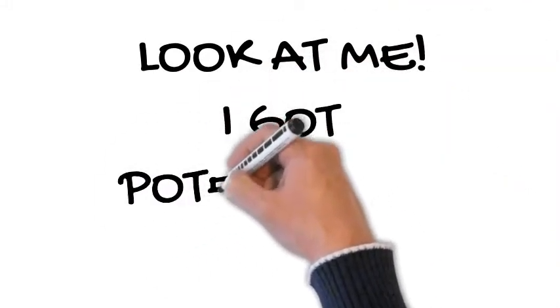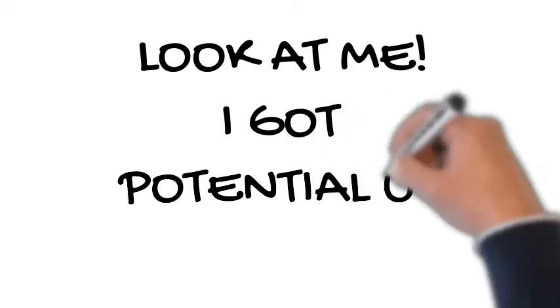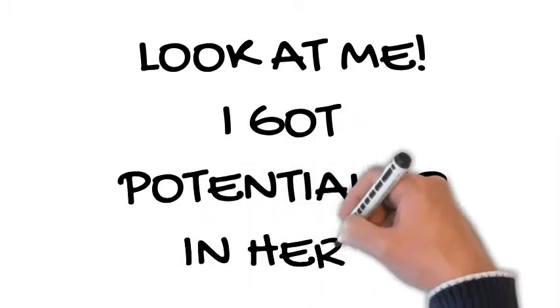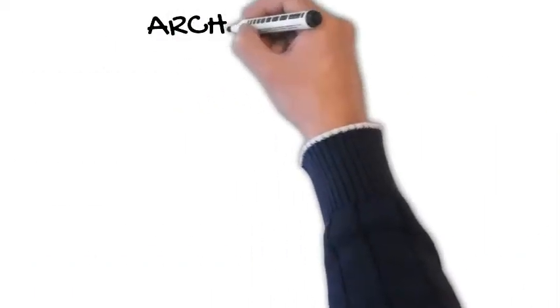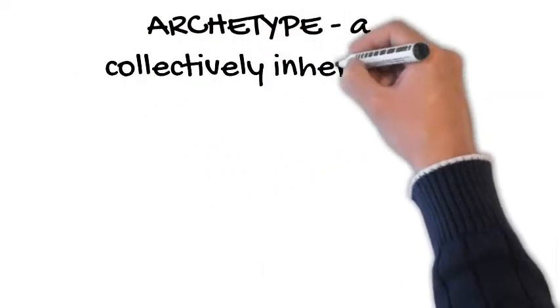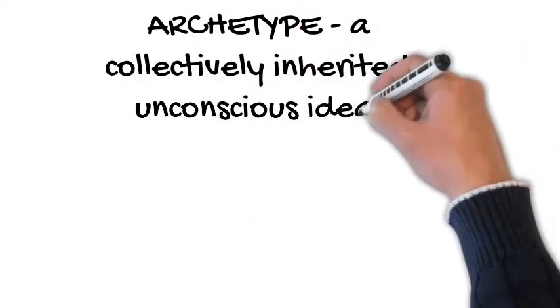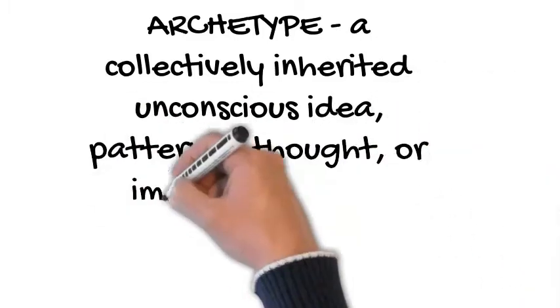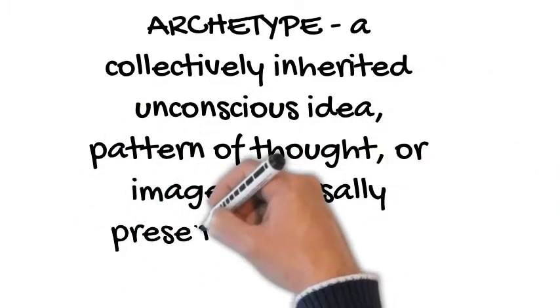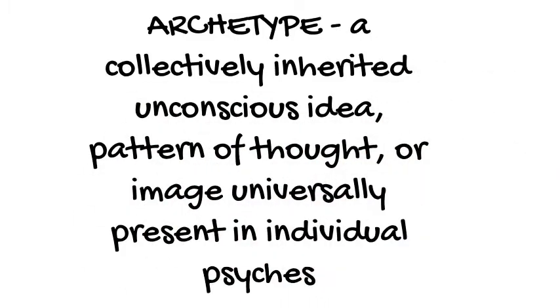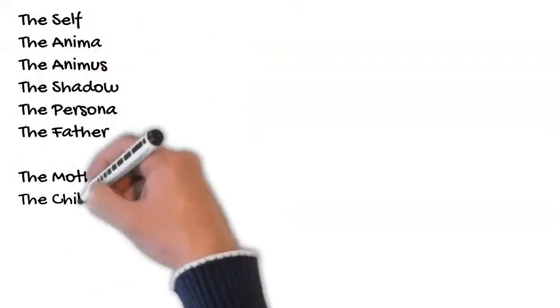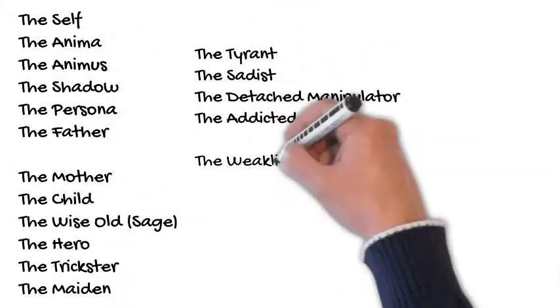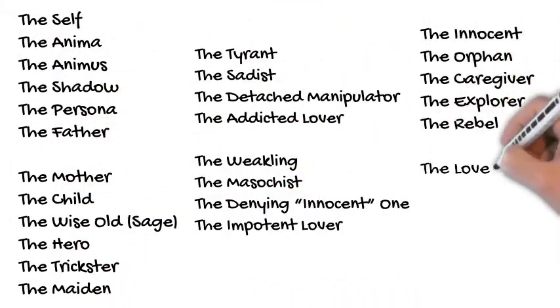These potential personality characteristics he called archetypes, and each person has all of the archetypes in their collective unconscious. Jung describes many archetypes but we'll review just a few.